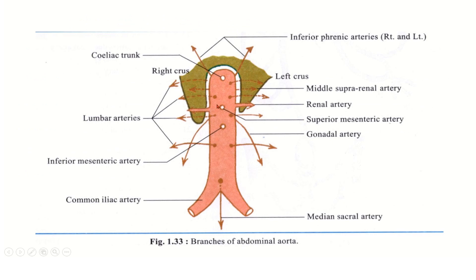You can see here the celiac trunk and ventral branches — superior mesenteric artery and inferior mesenteric artery. You can also see the lateral branches: inferior phrenic arteries, middle suprarenal artery, renal artery, and the gonadal artery. The median sacral artery and the terminal branches, the common iliac arteries, are also visible, along with the lumbar arteries.